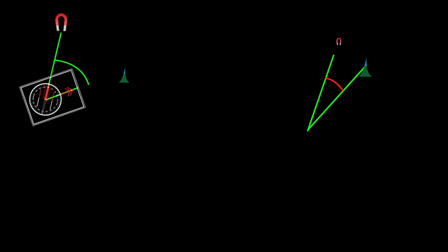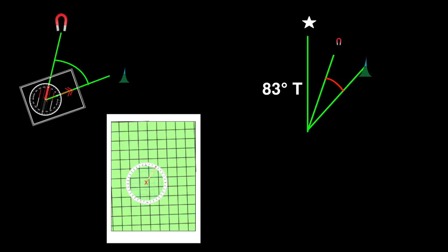Finally, you can compare bearings between two known locations. Take the bearing in the field with your compass, and then measure the bearing on your map relative to true north. The difference between the bearings is the current declination.